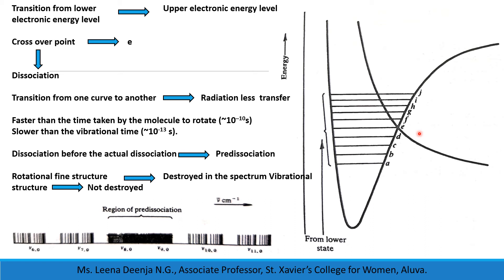This type of dissociation before the actual dissociation limit is known as predissociation. Thus, predissociation can occur before the molecule rotates, and so all rotational fine structure will be destroyed in the spectrum. But here the vibrational structure is normally not destroyed.